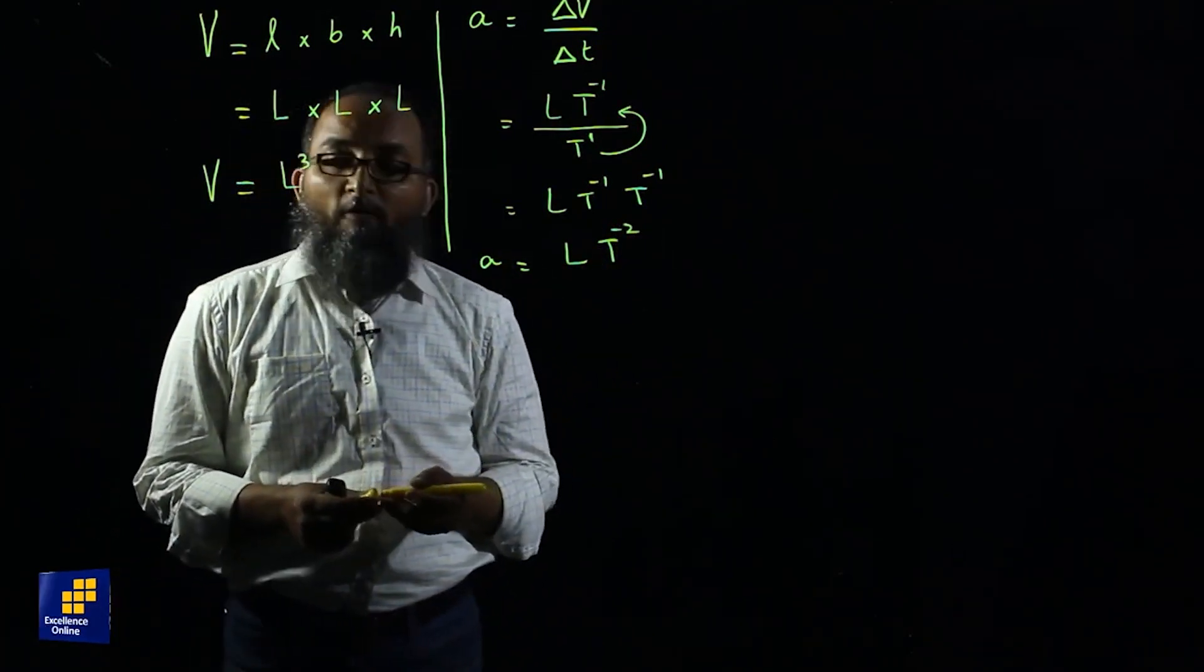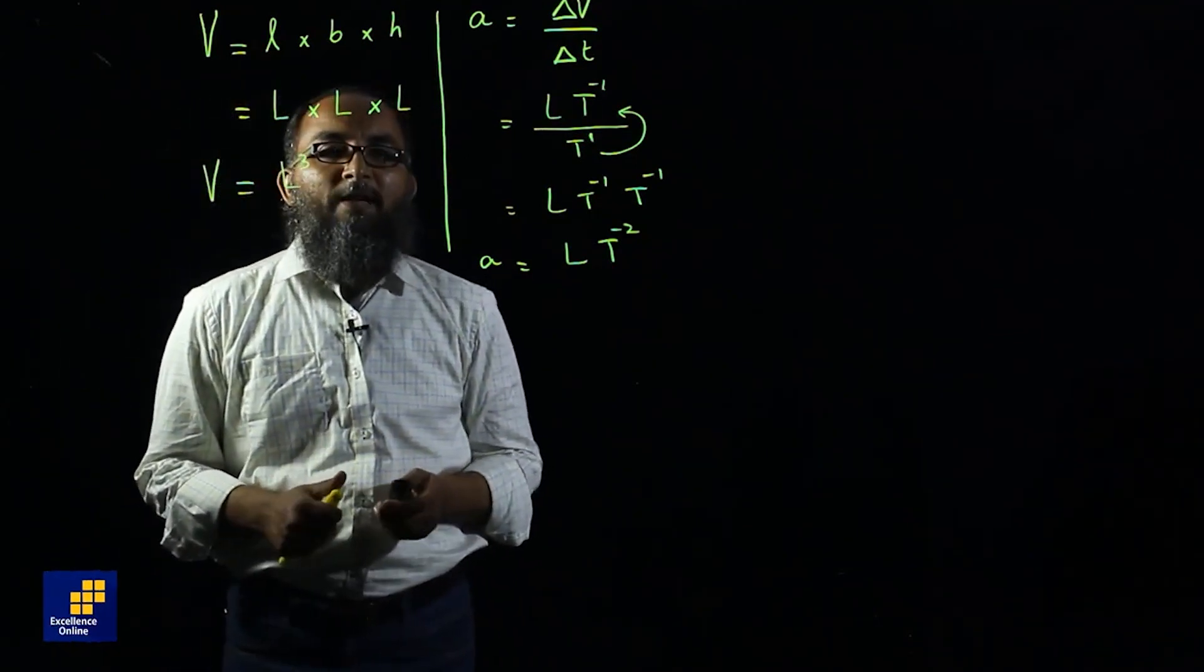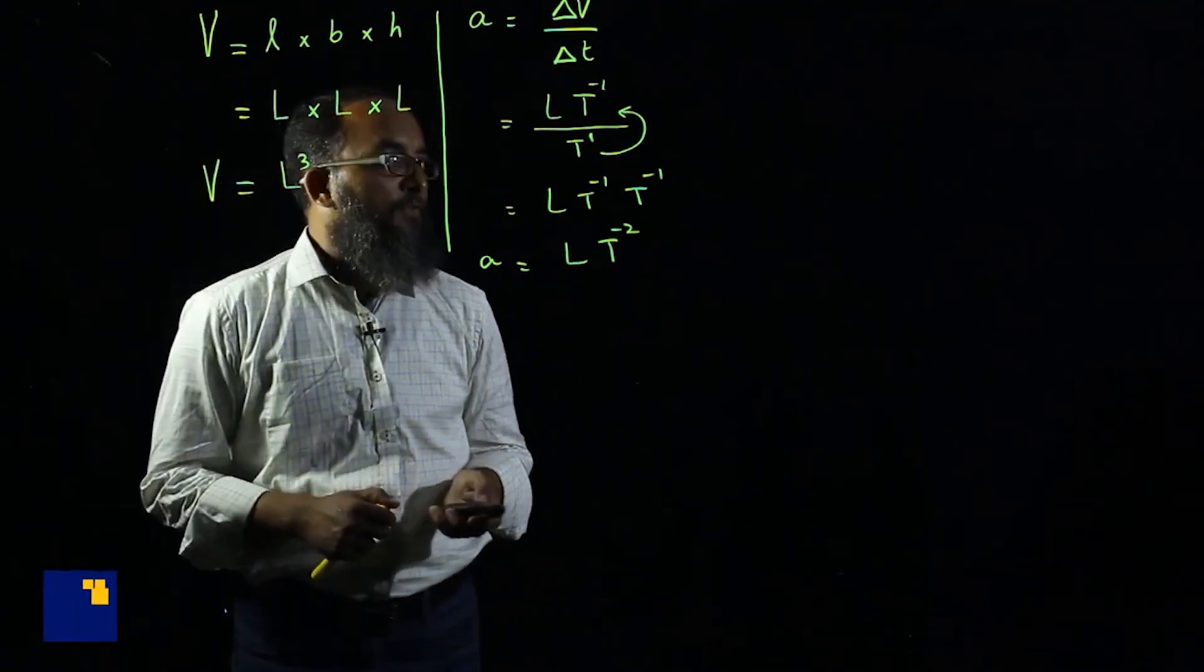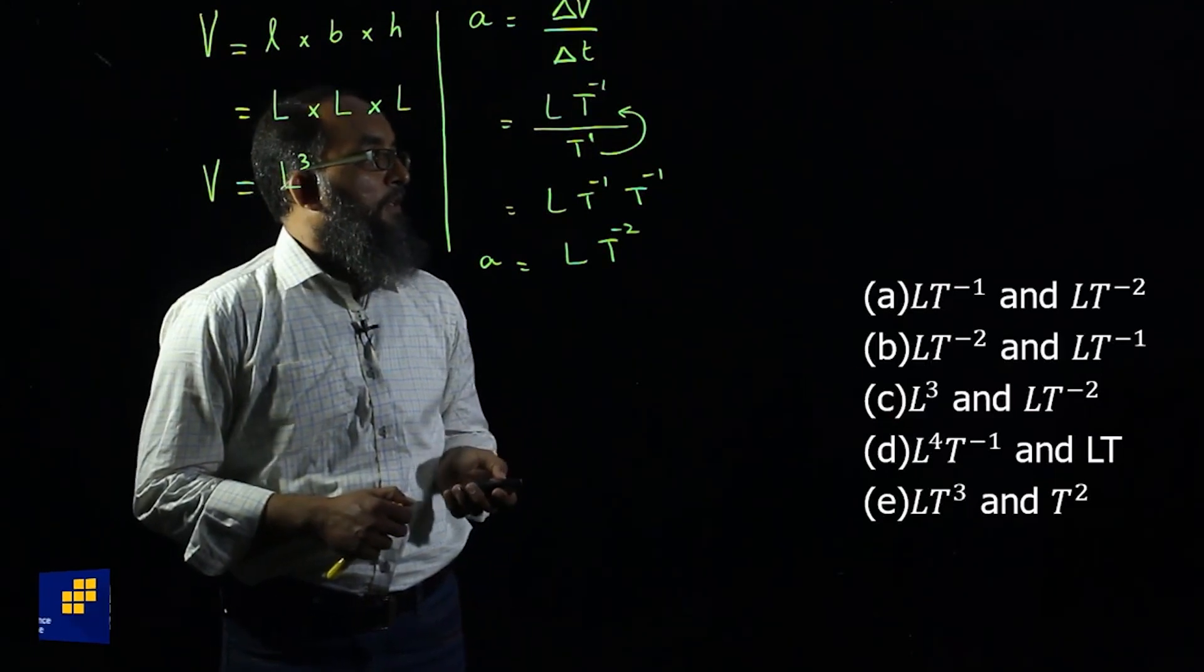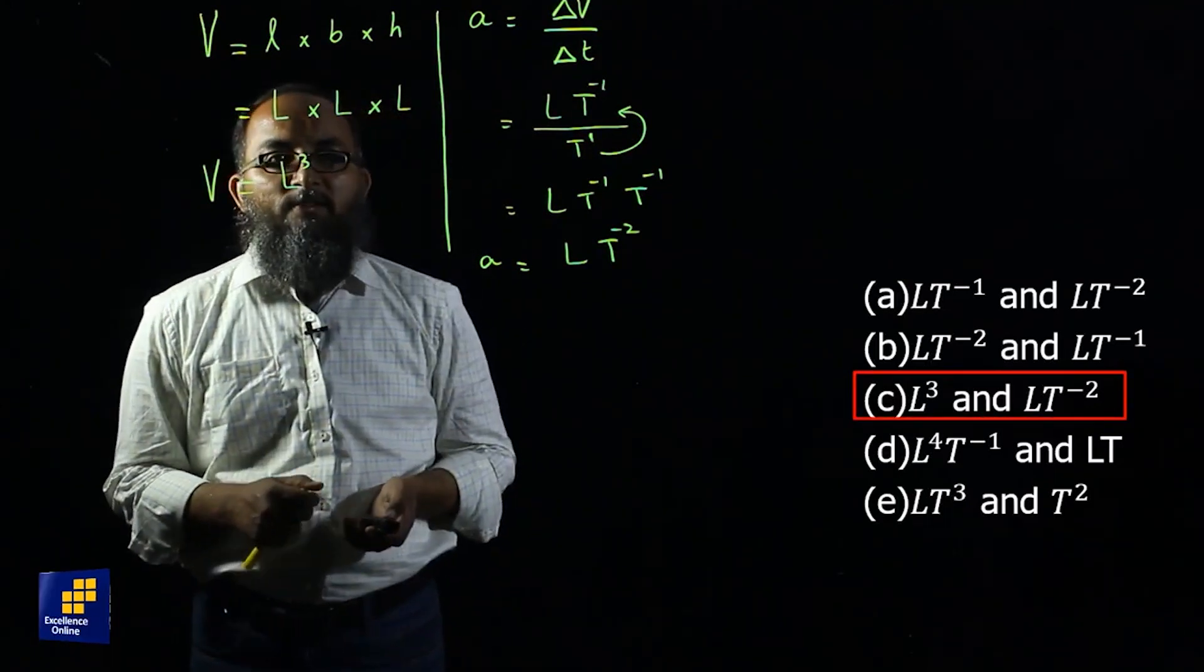So the dimension of volume is L cube, and the dimension for acceleration is L t power minus 2. And the correct option is C, L cube, L t power minus 2.